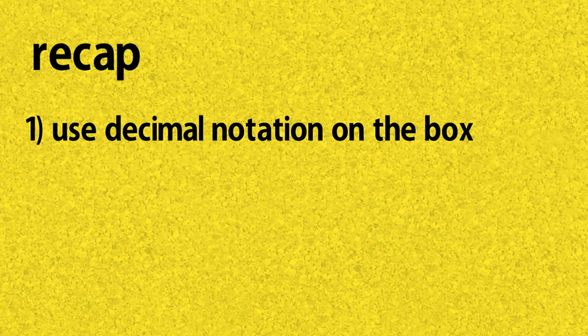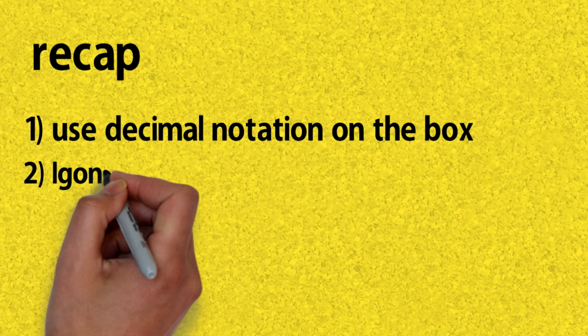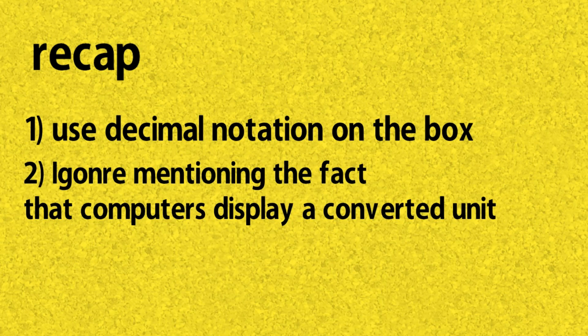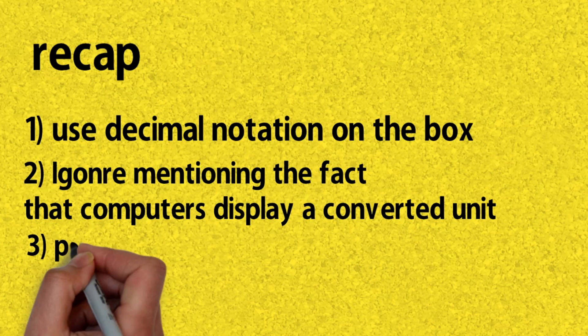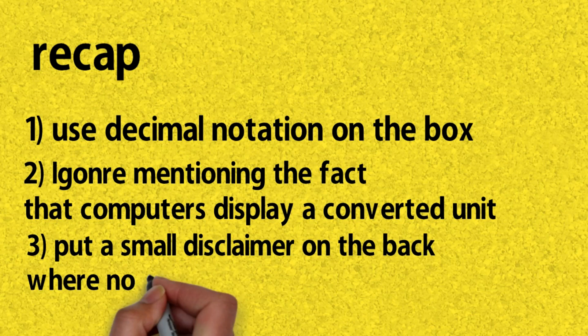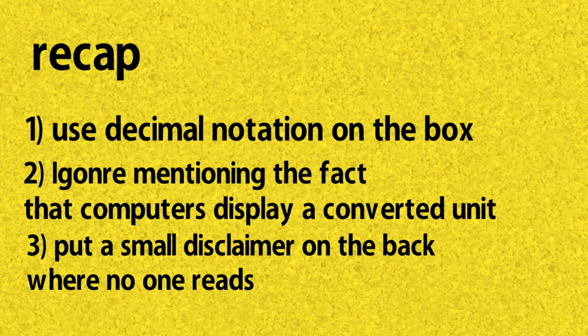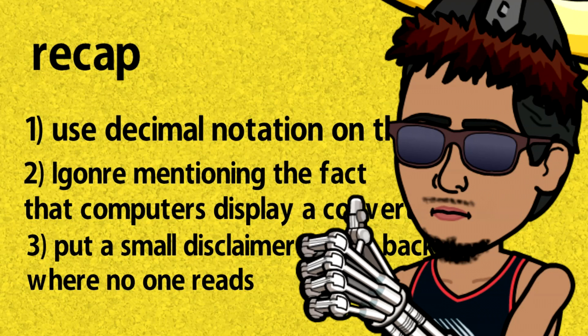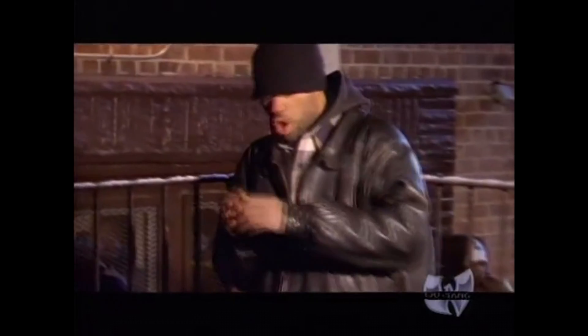So let's recap. Basically, they write on the box using our normal everyday decimal system, while in their heads they are thinking of a completely different binary-based system the whole time. They get away with it by putting a disclaimer on the box saying the numbers are in decimal, and since most people don't read the back of the box, that makes it legal.